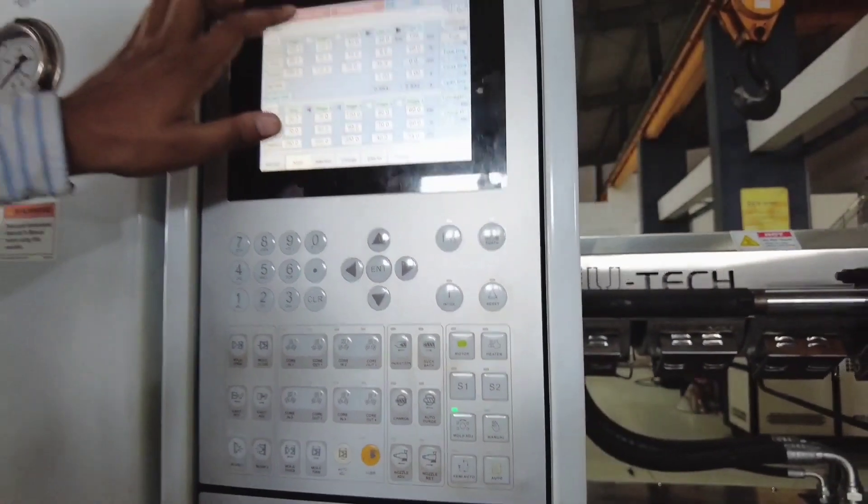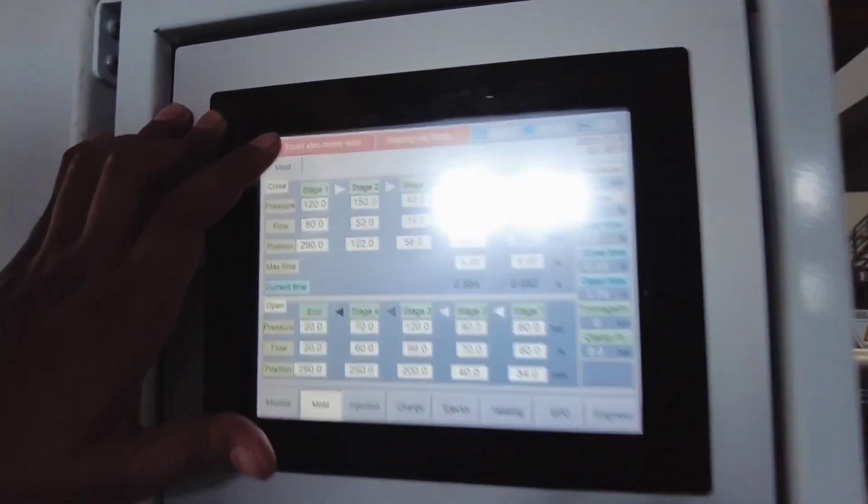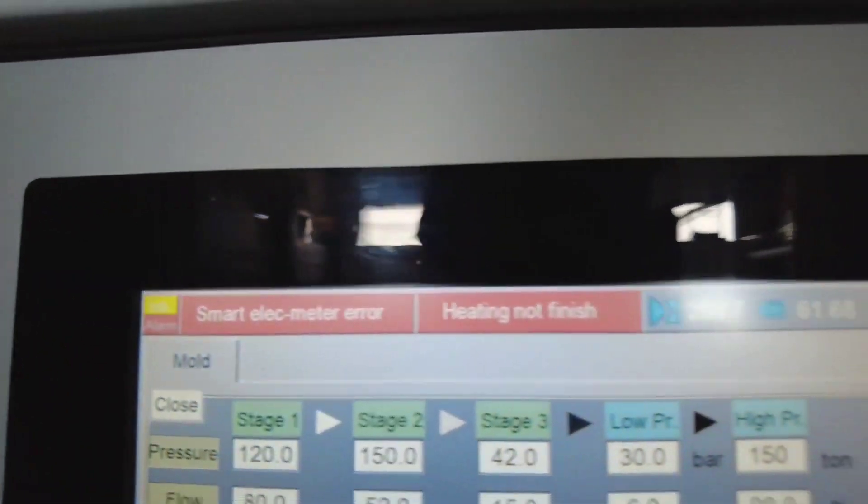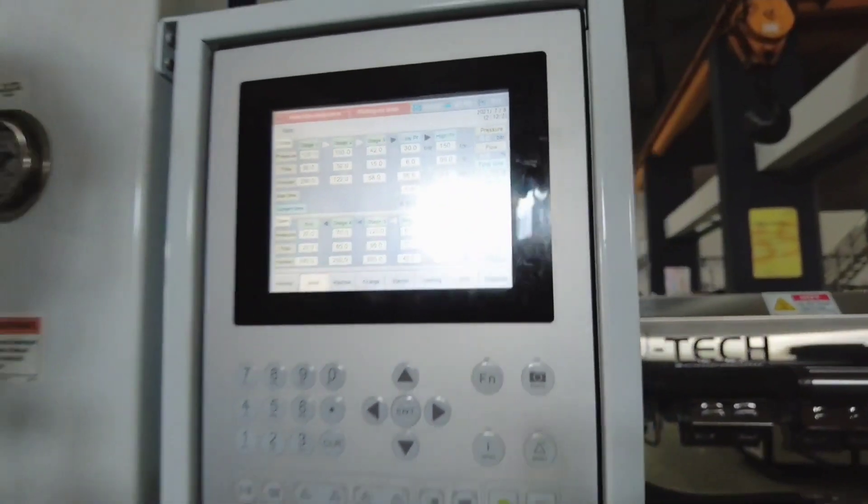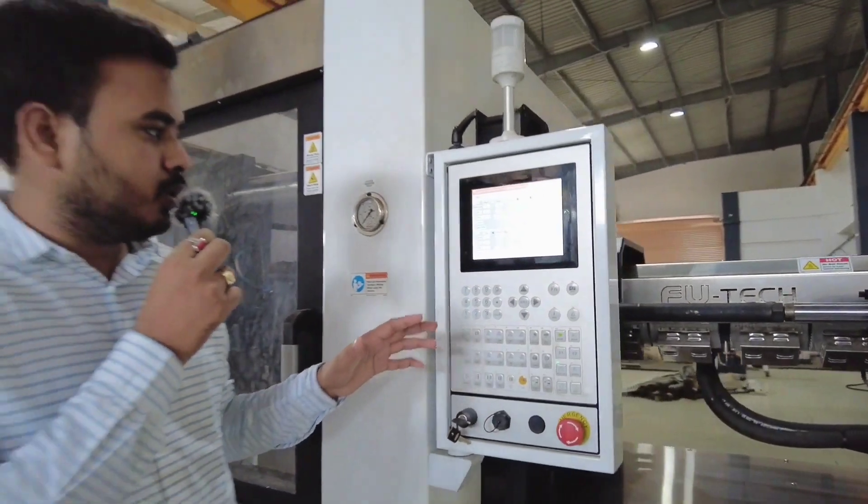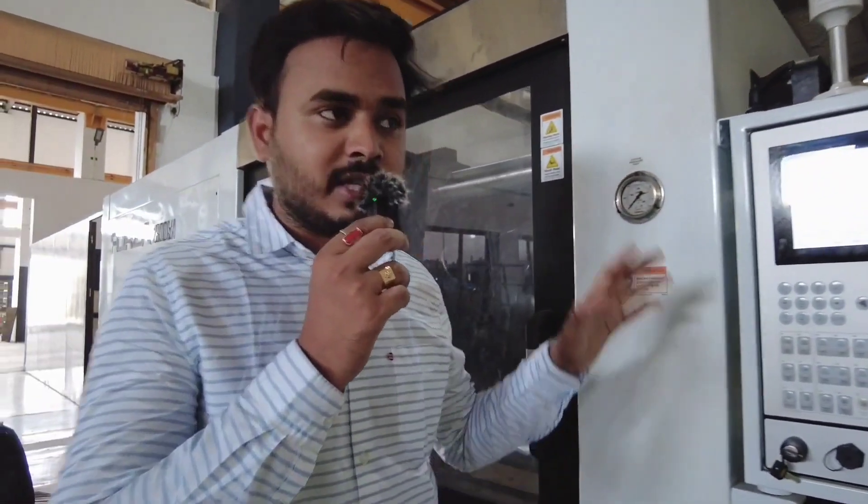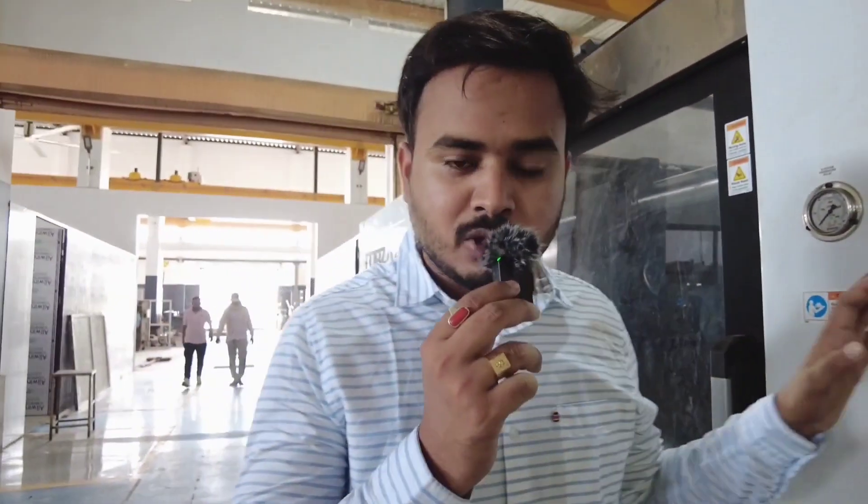So this was our video on emergency operation. Emergency operation is a most important thing that you have to know. When you press the emergency button, your motor will also be stopped. So to start the machine again, you have to press the motor button to start it.